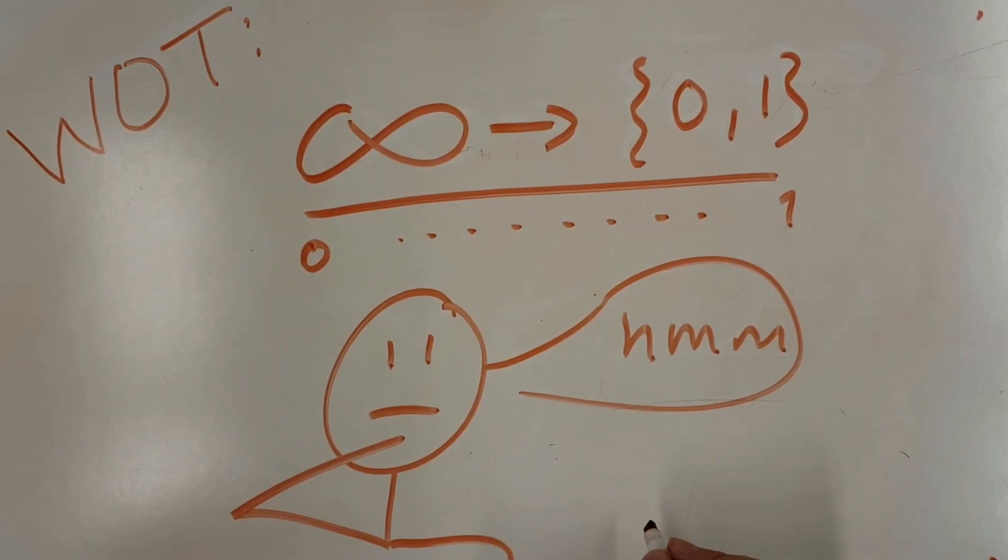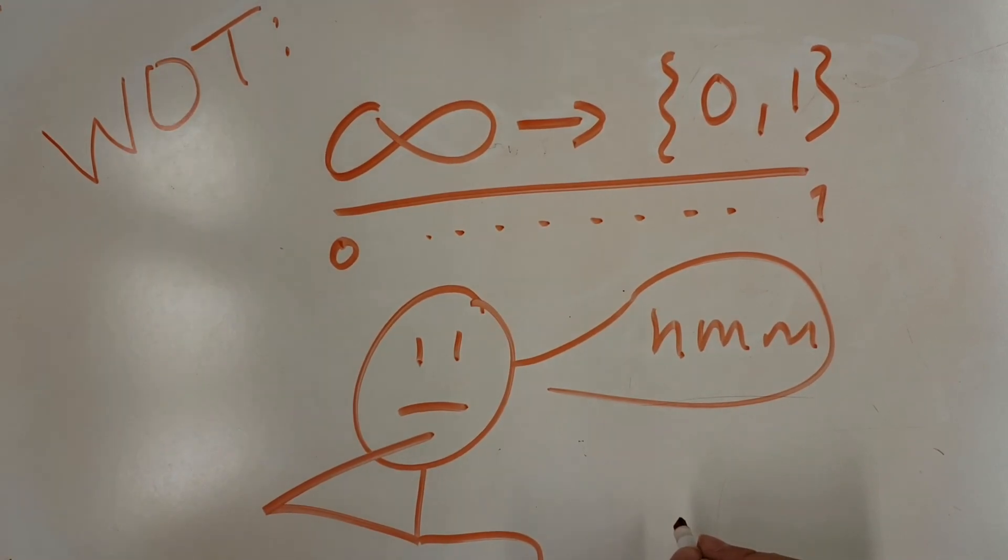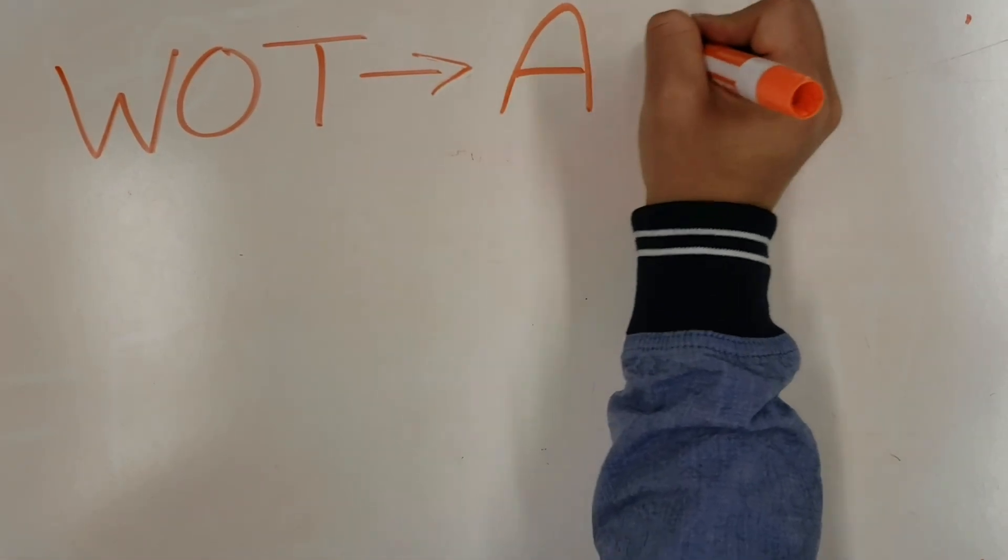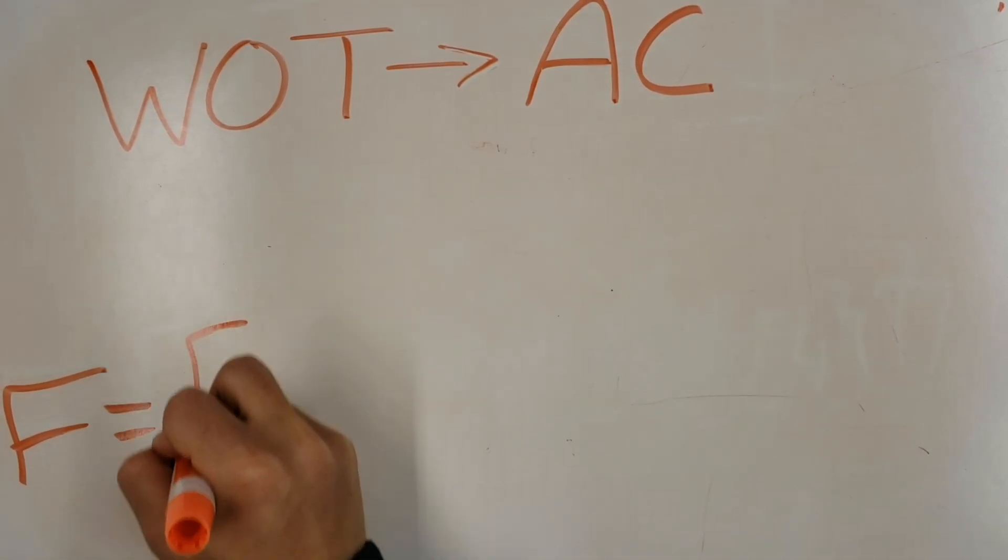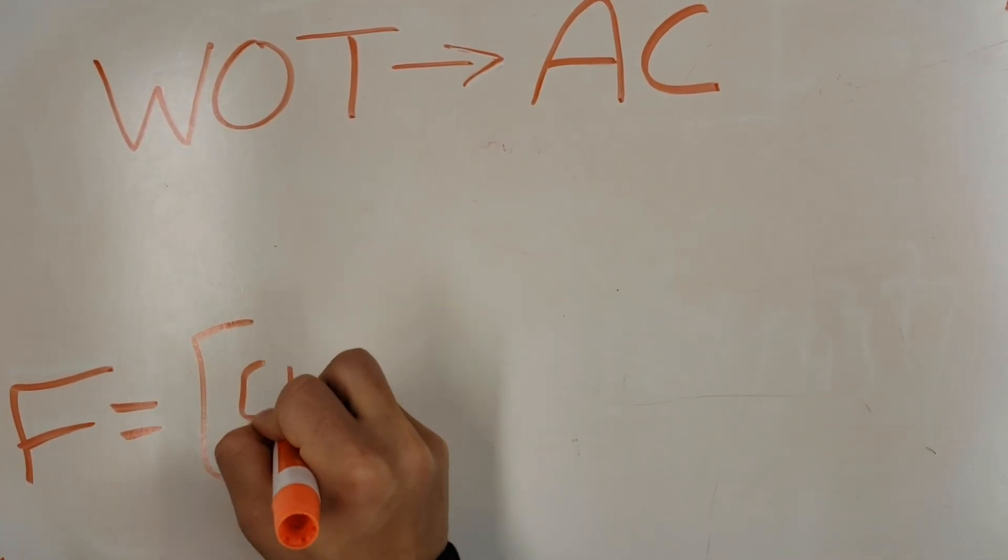Actually they kind of have a lot to do with one another. Let's see why. The well-ordering theorem implies the axiom of choice. We define F as an arbitrary collection of sets.